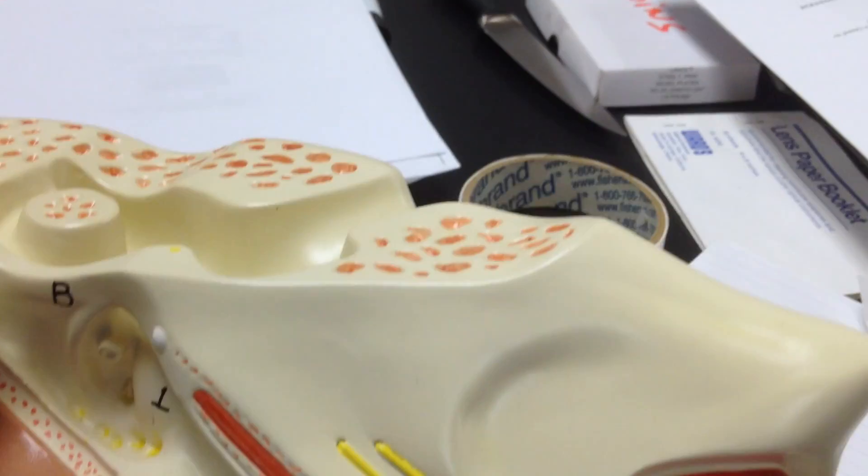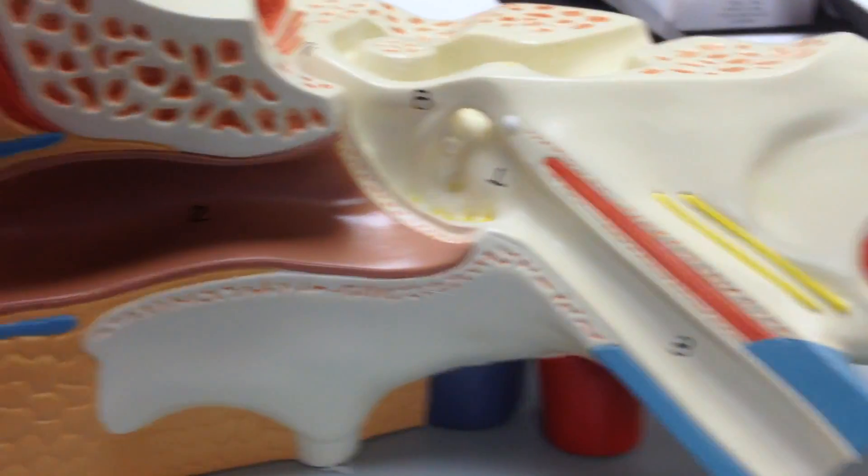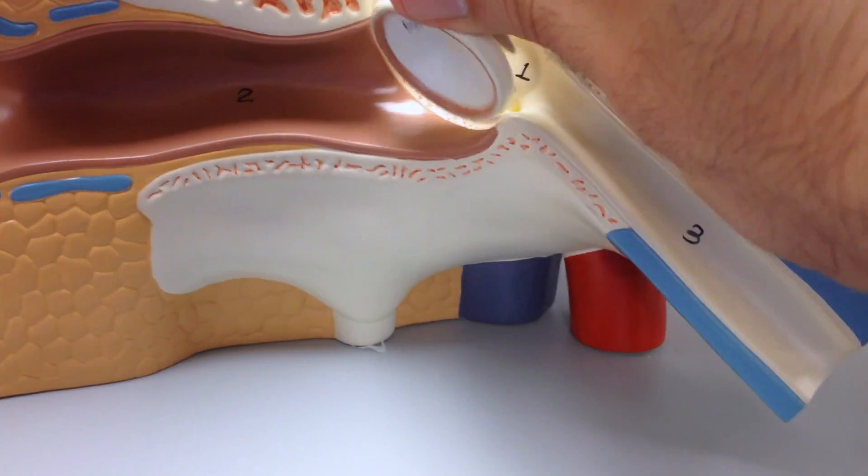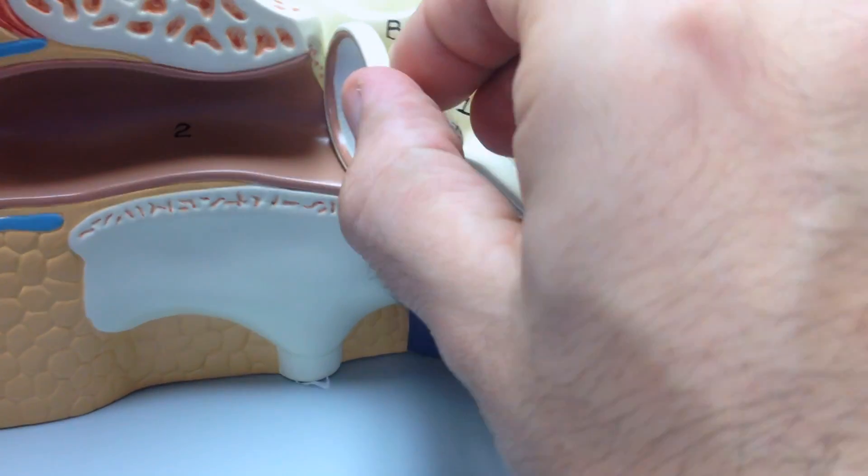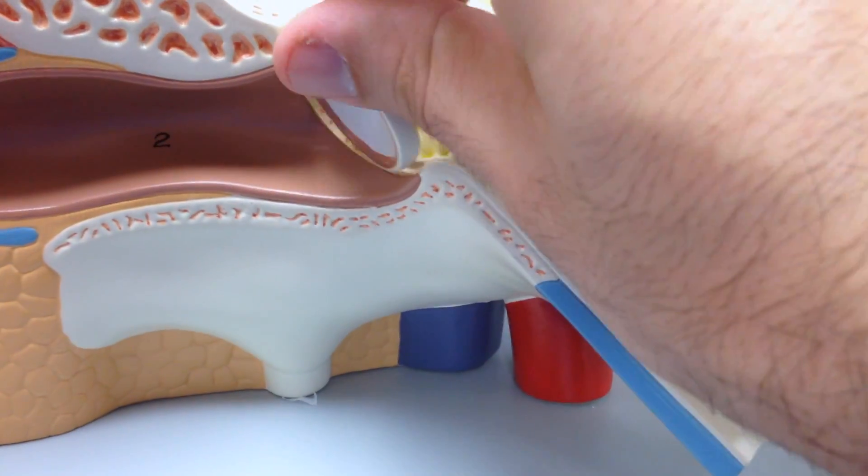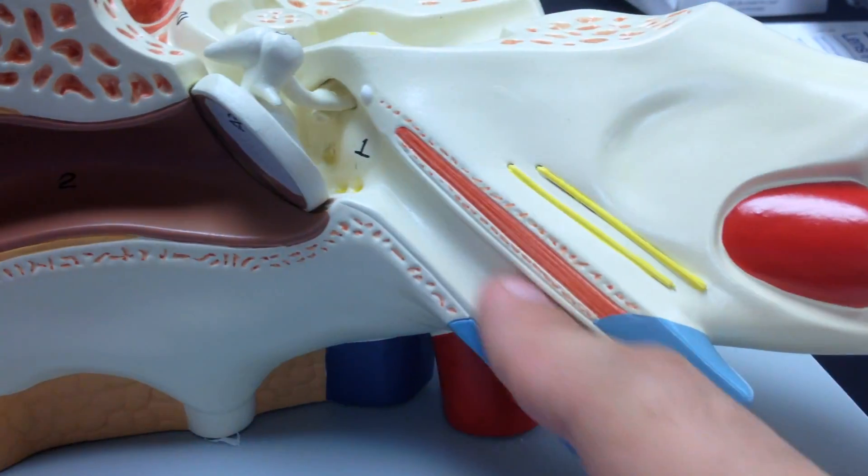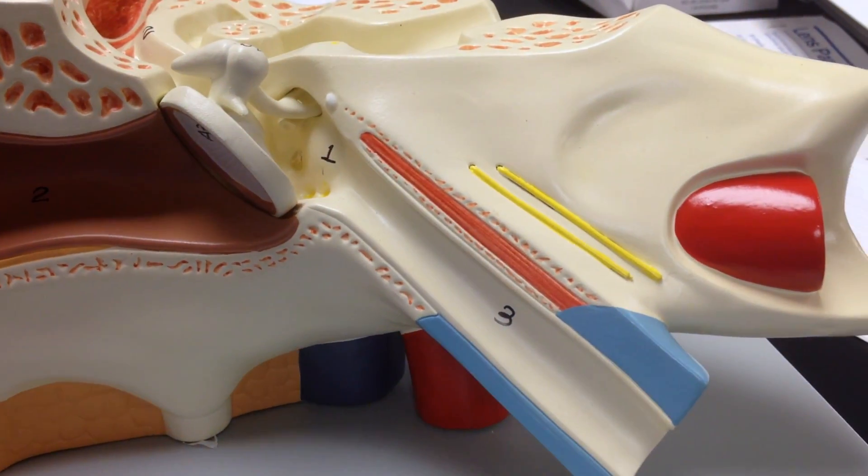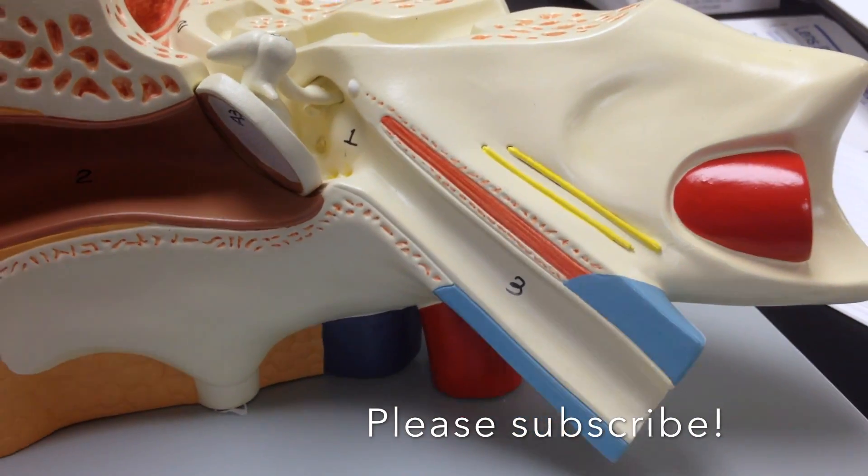And then finally, one last structure here, is that at the end of the external acoustic meatus, I have the option to go down your nose again. And this is your auditory tube or pharyngotympanic tube. That's it.